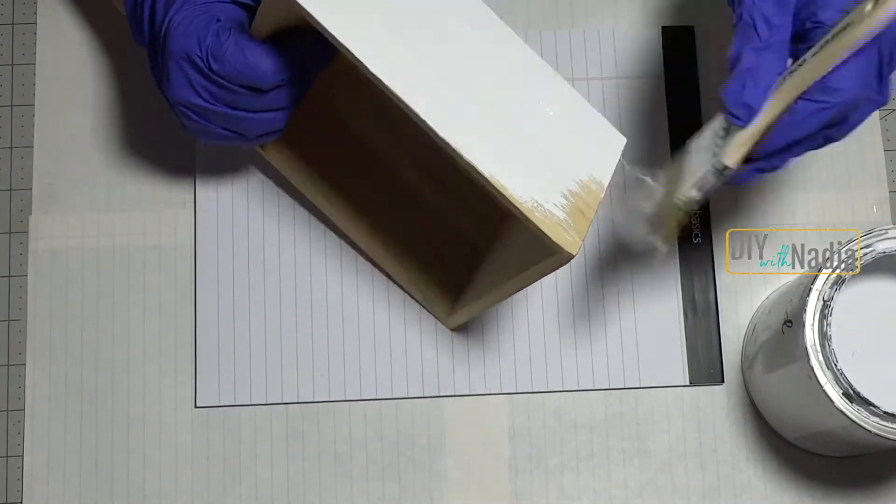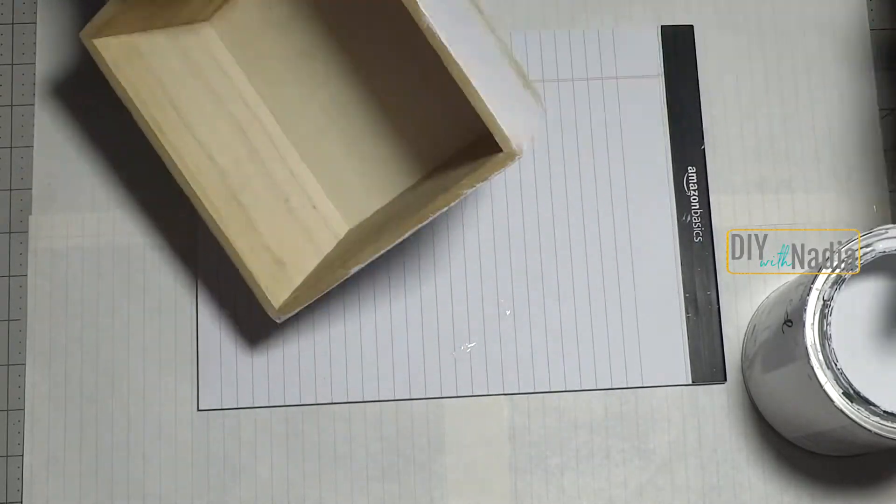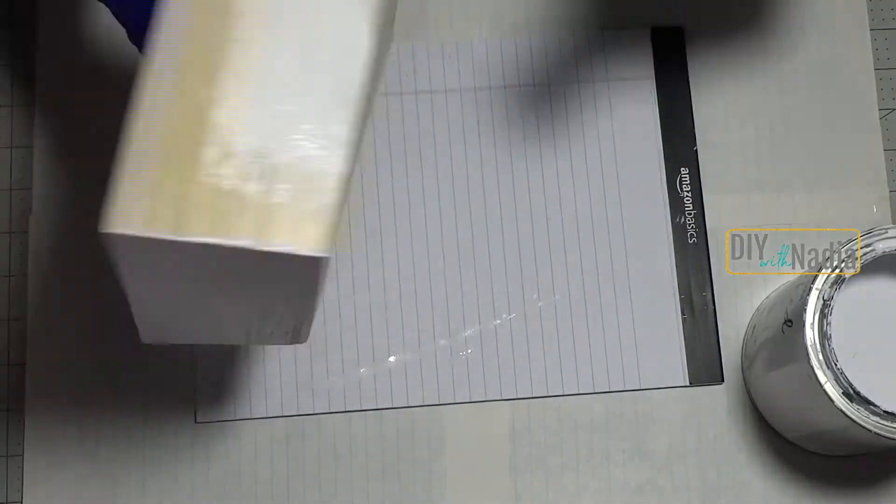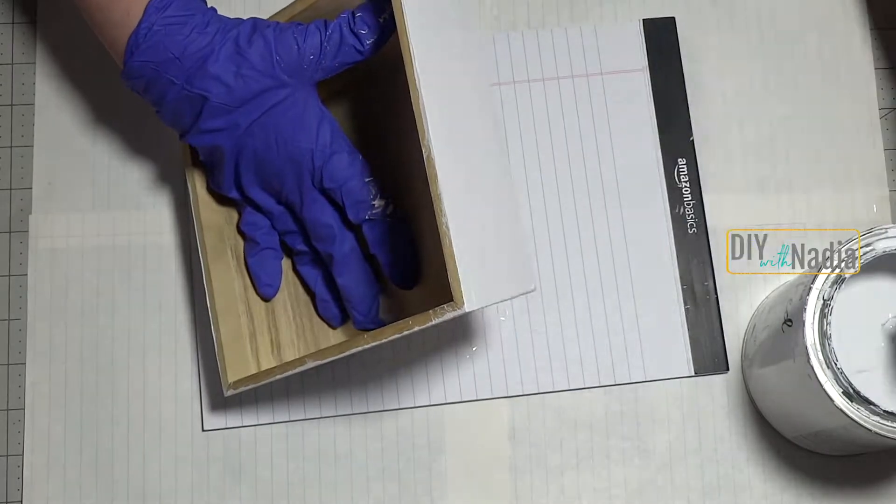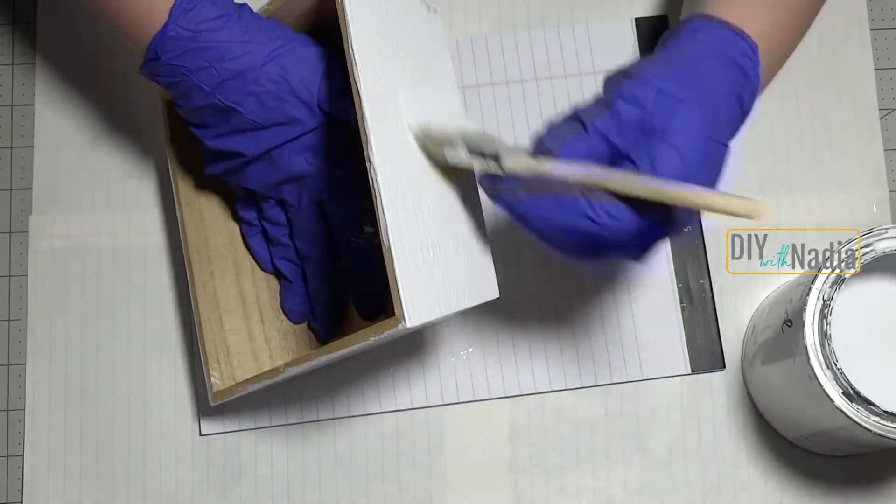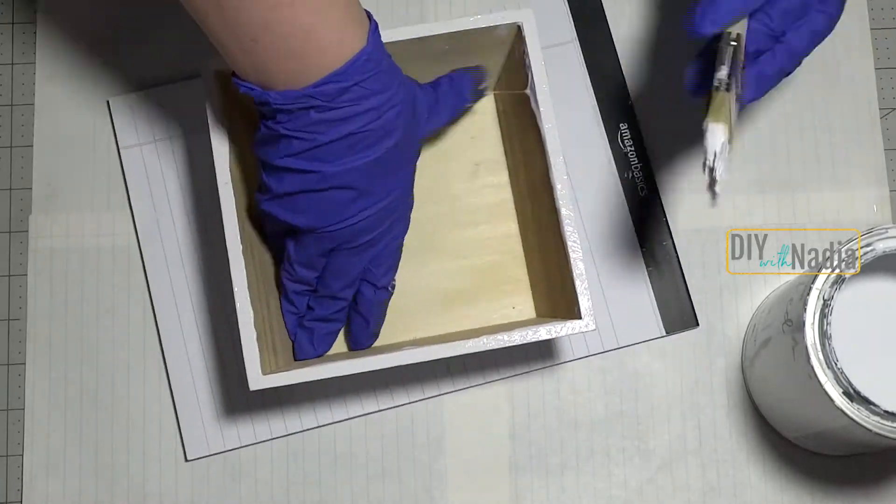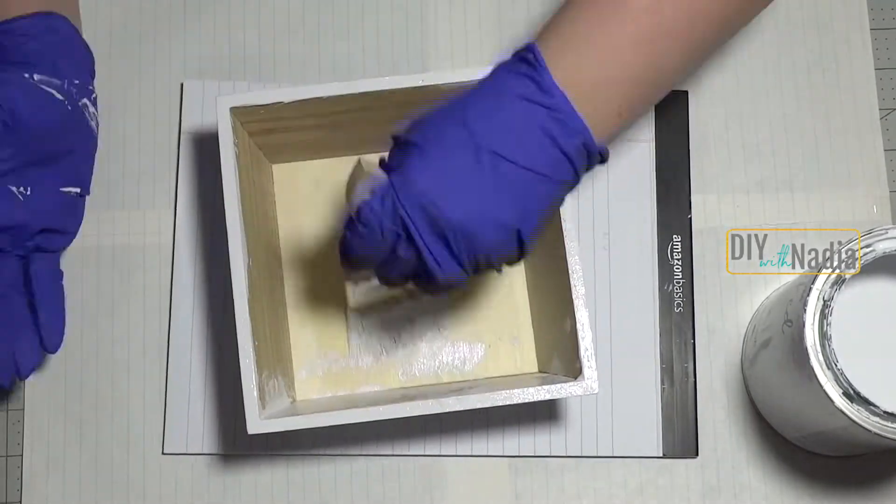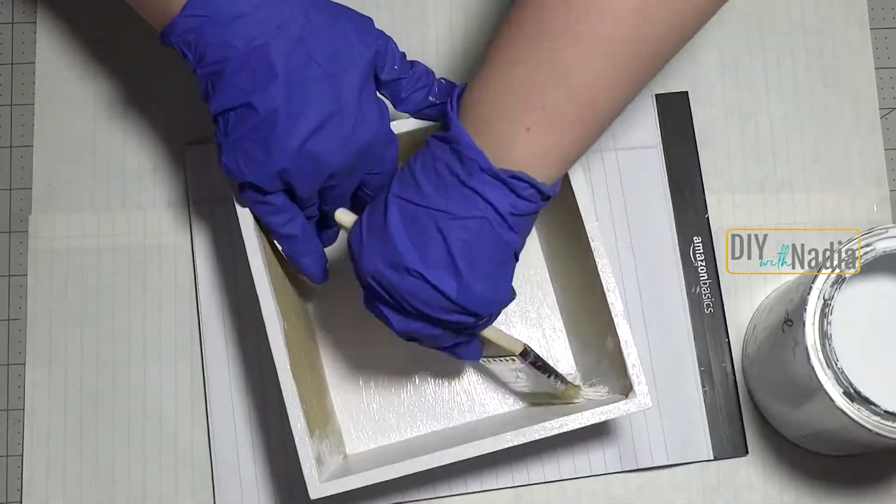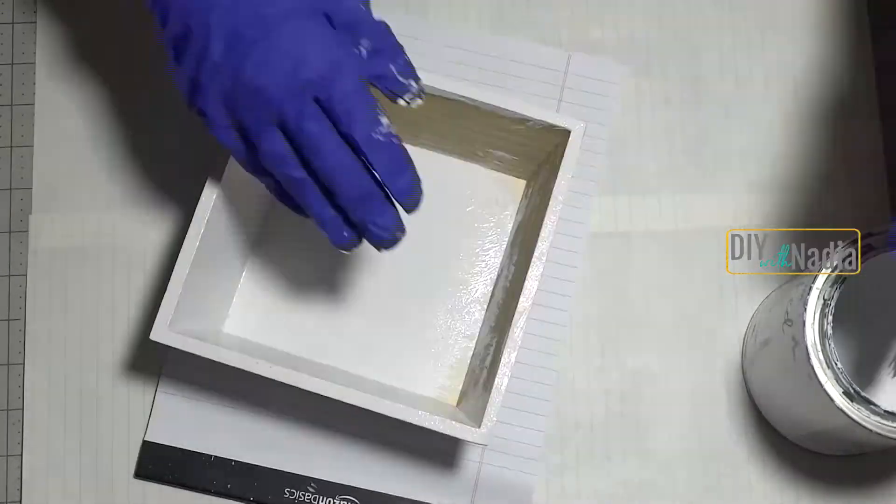Because the trays were made out of bare wood, it took me three coats of Rust-Oleum chalked linen white paint because it kept on being absorbed by the wood. I would leave it to dry and see wood peeking through. It took three coats for both of the trays to cover completely.